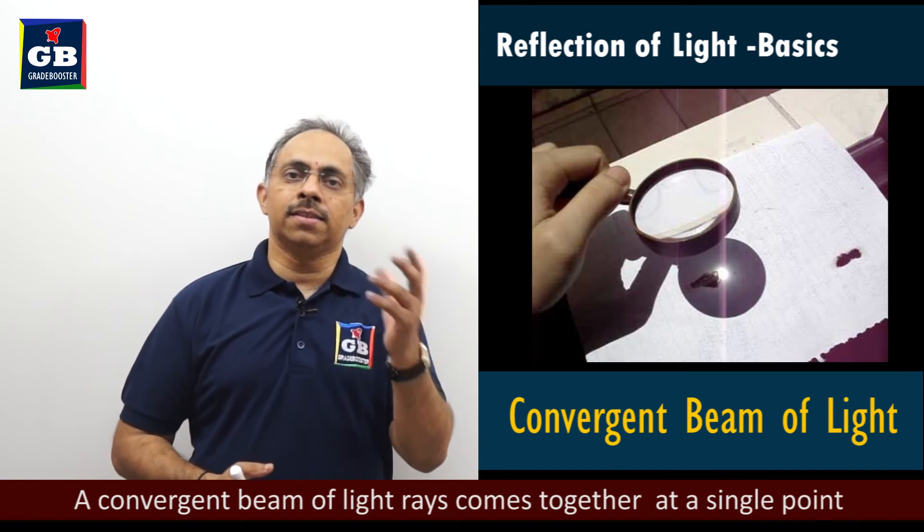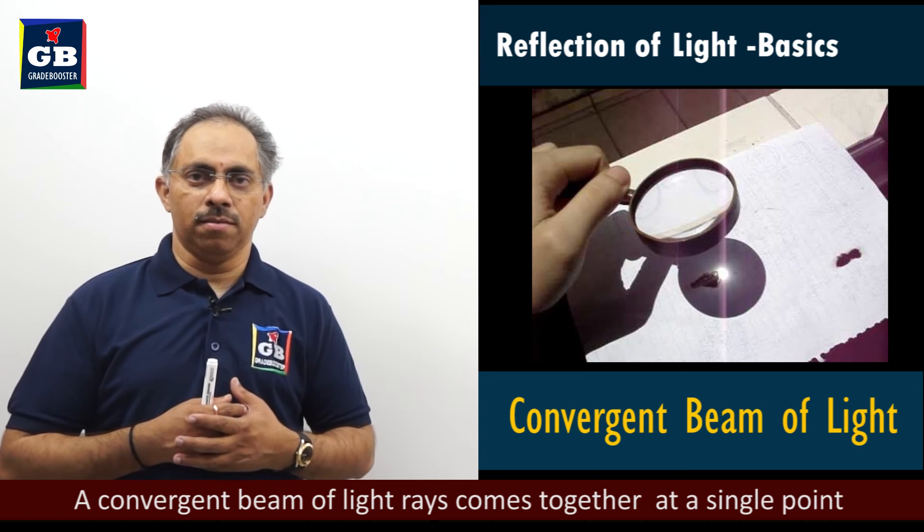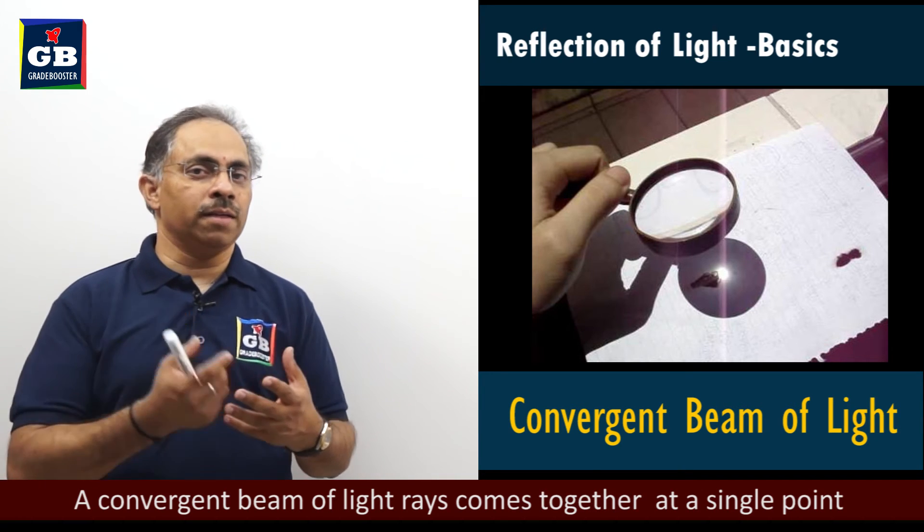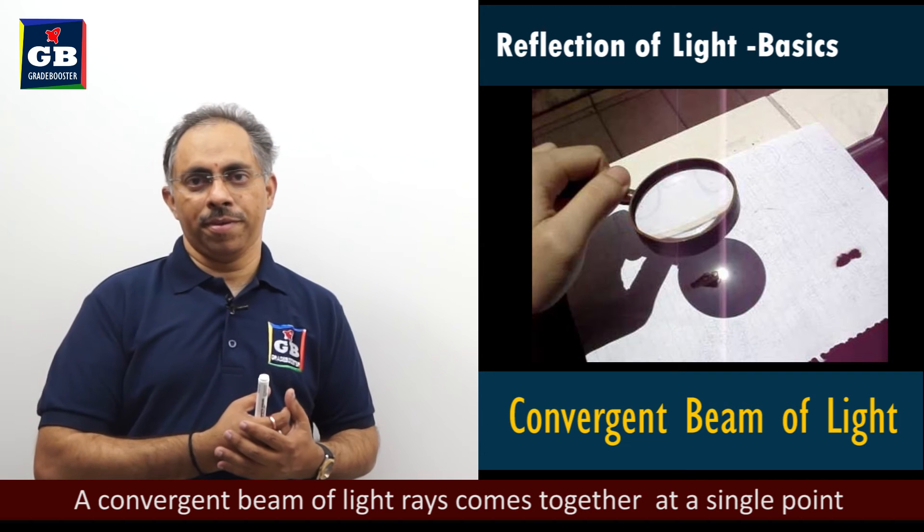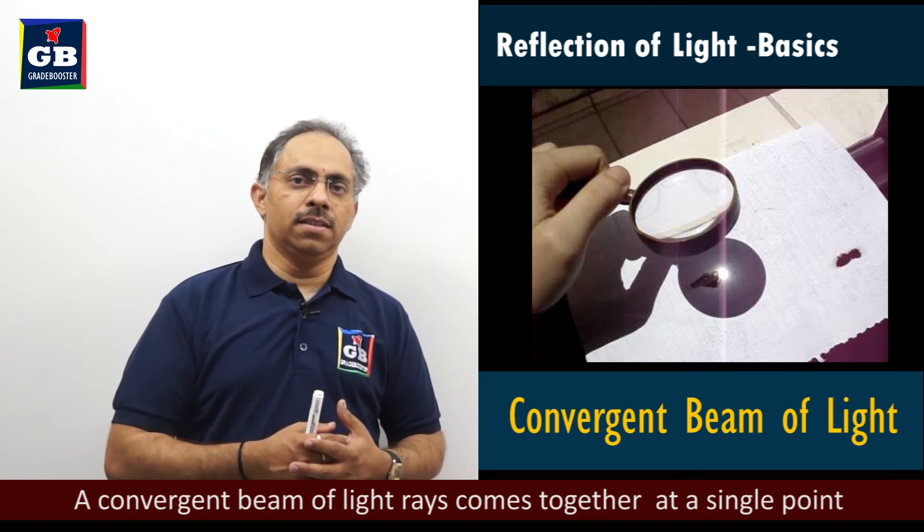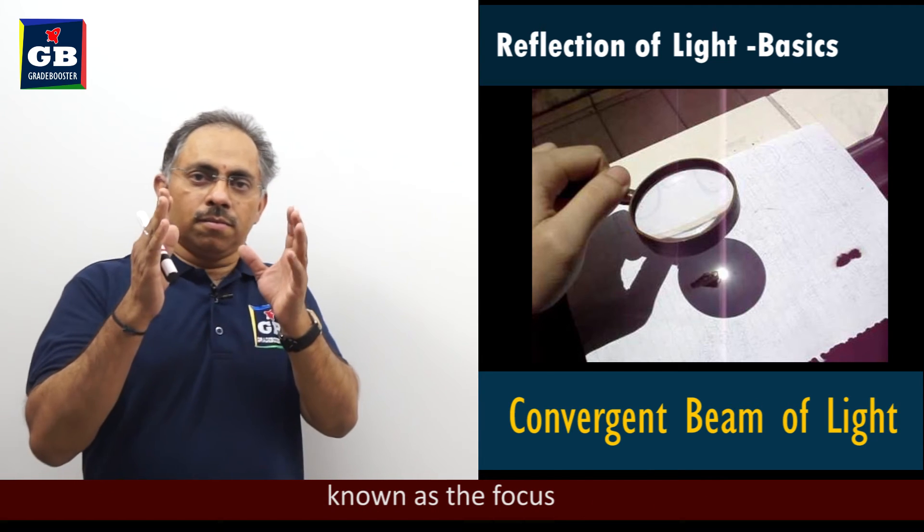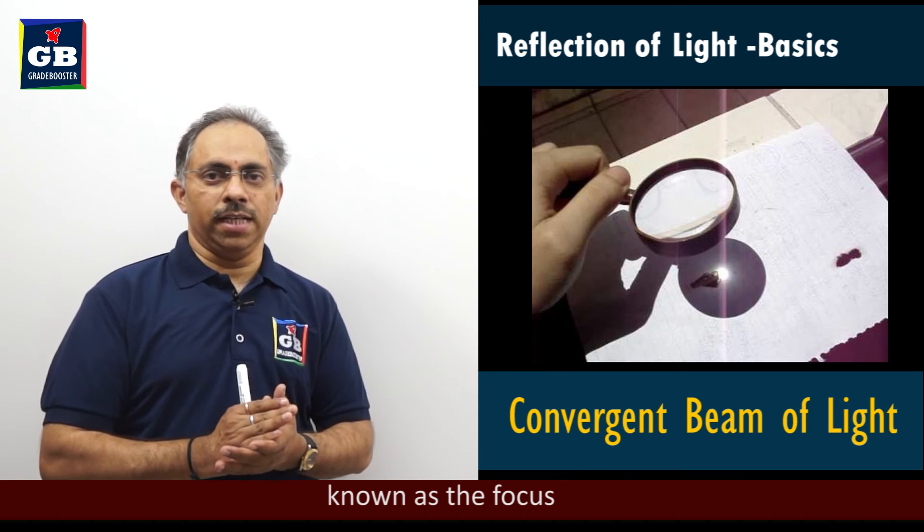And there is a third beam of light called convergent beam of light. So how do we get about the convergent beam of light? When we study about concave mirrors, then we will be able to know what is the convergent beam of light.